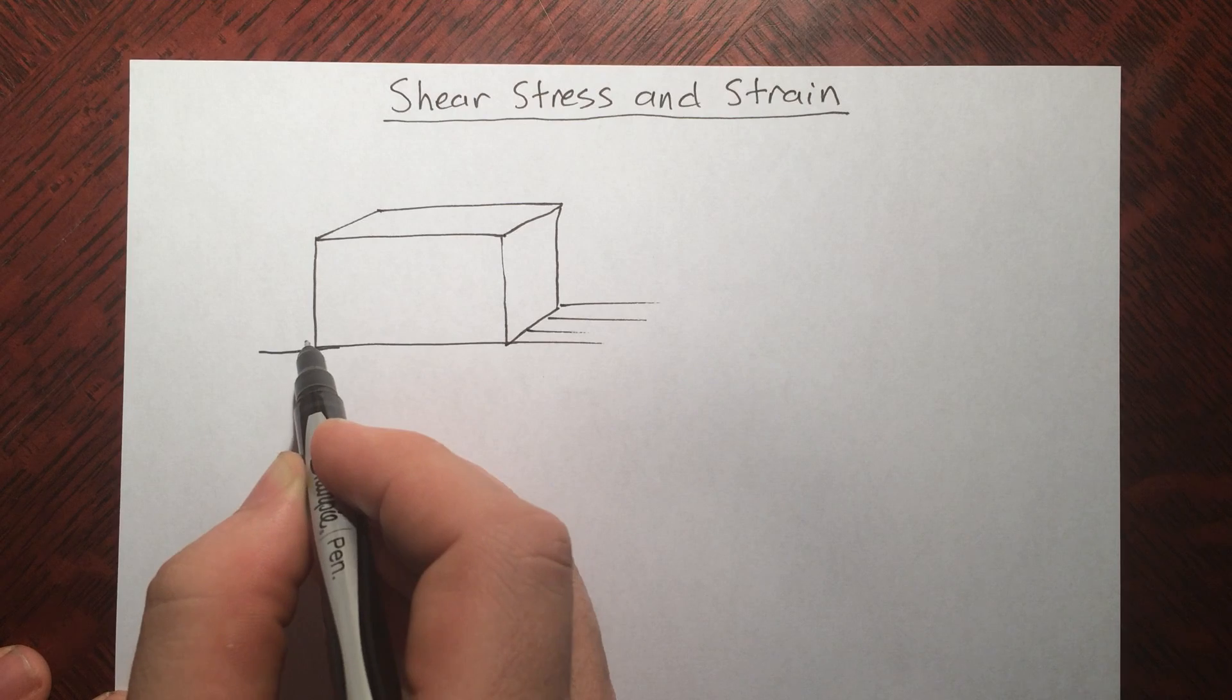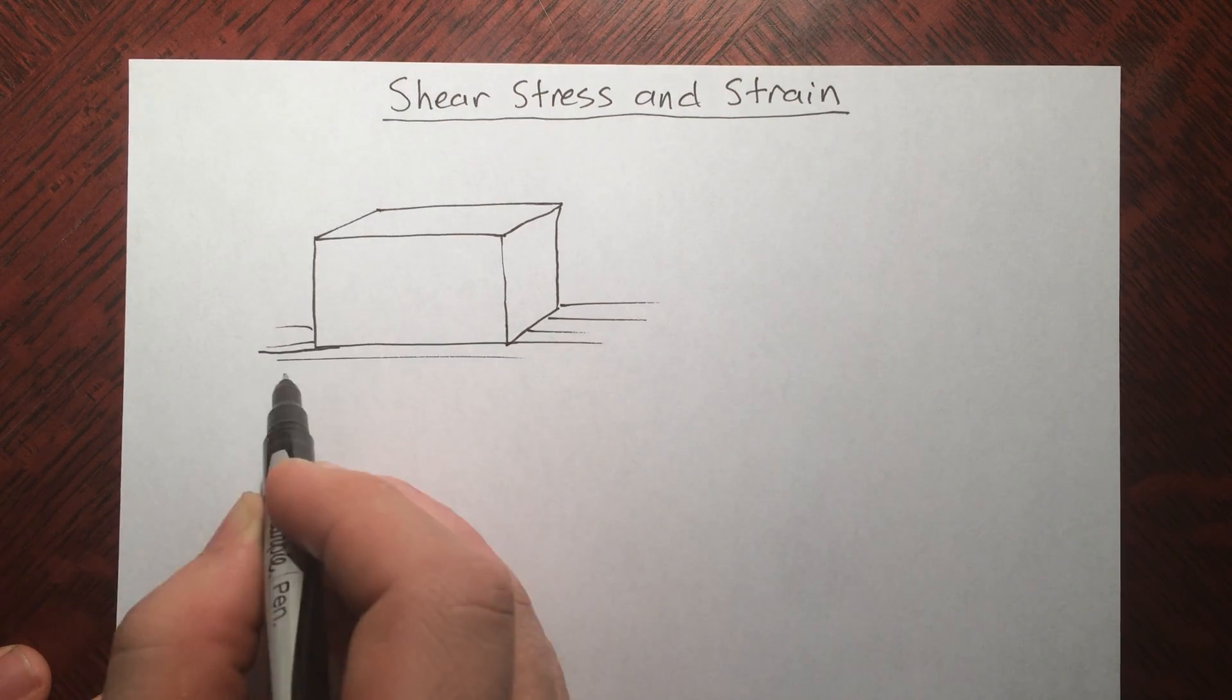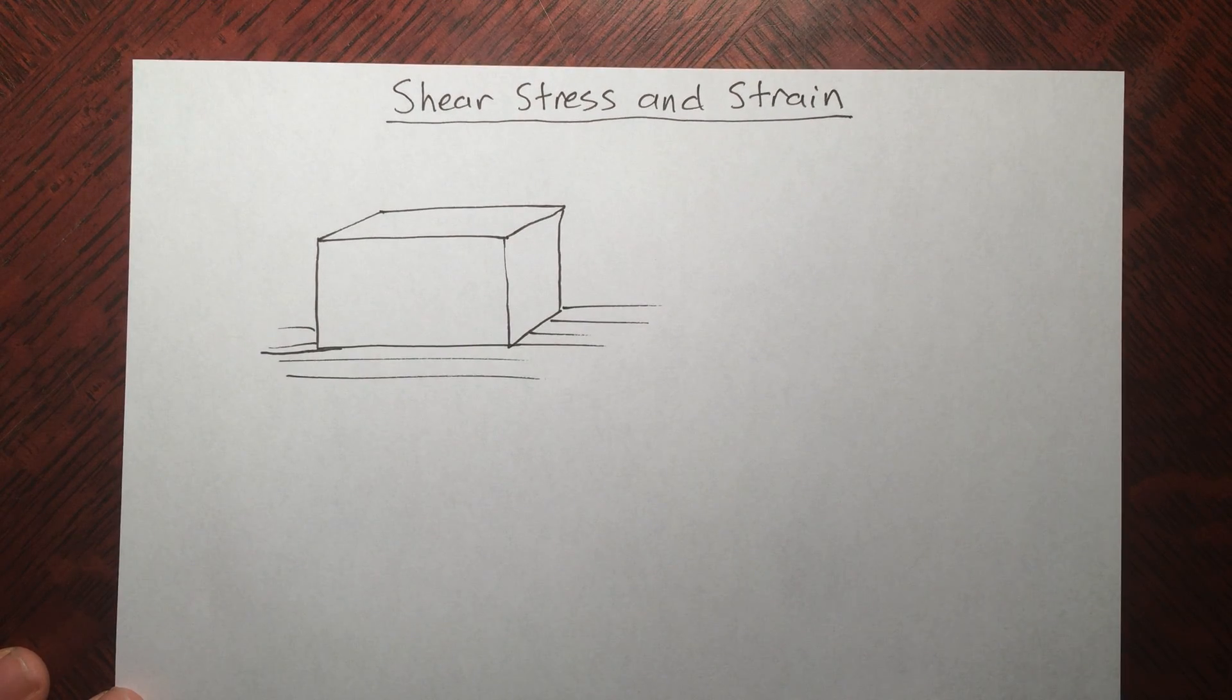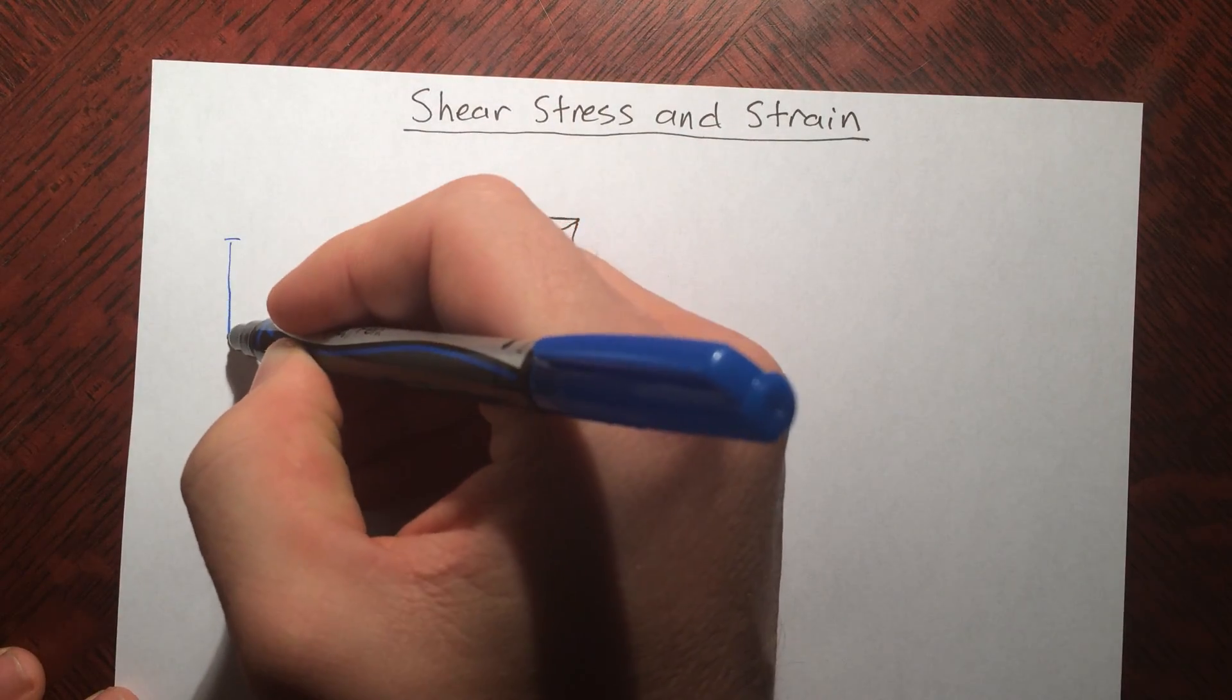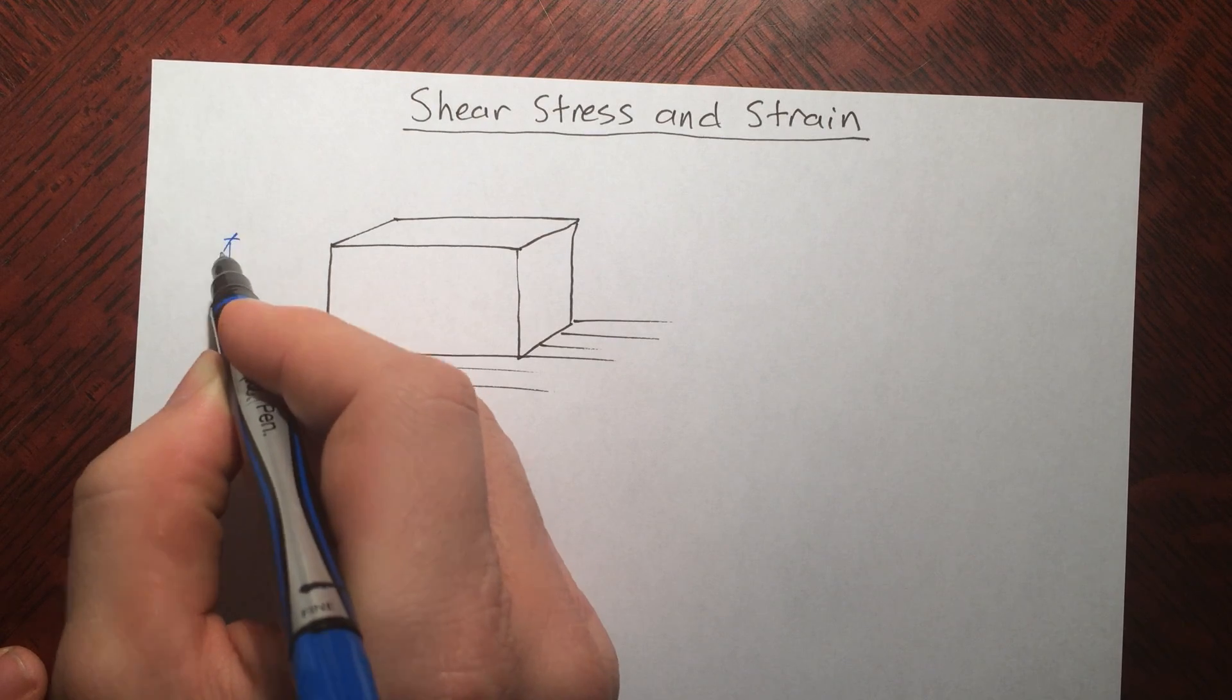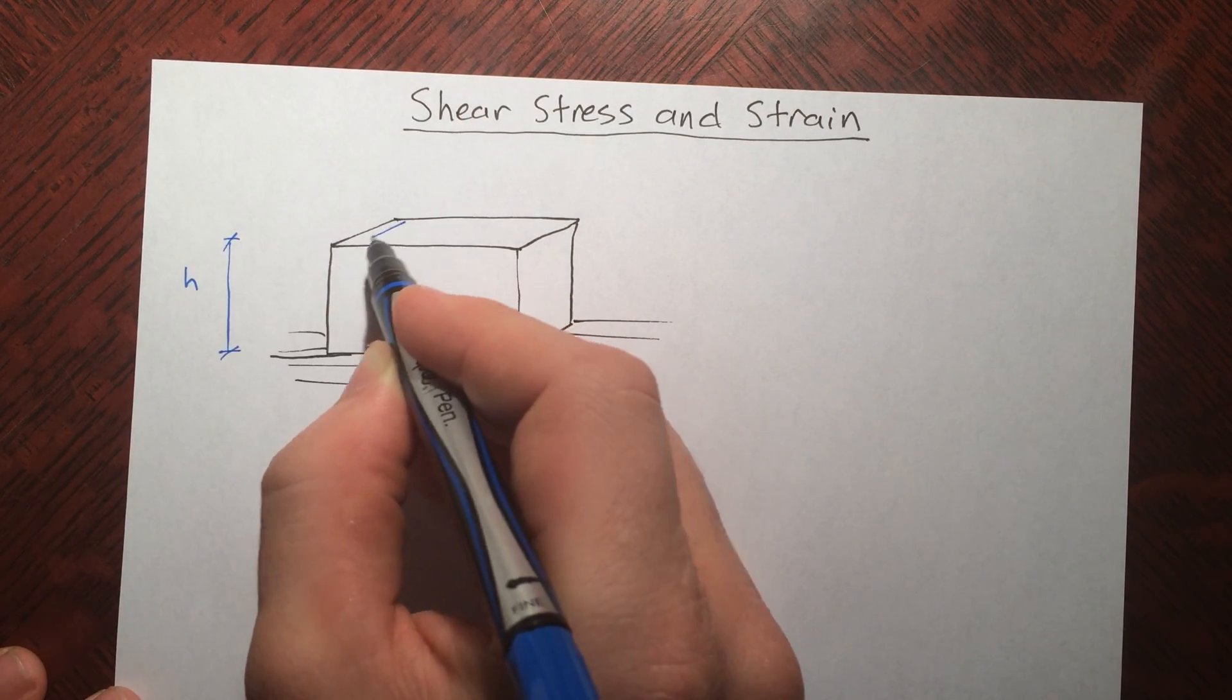And it's on some sort of surface, it could be a table or whatever. Of course it has some dimensions. Let's call its height h.